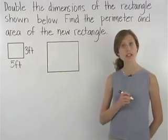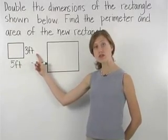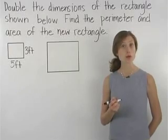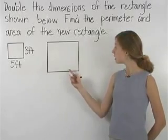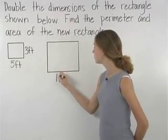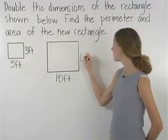Here, notice that our original rectangle has a length of 5 feet and a width of 3 feet. If we double the dimensions of our original rectangle, then our new rectangle will have a length of 10 feet and a width of 6 feet.